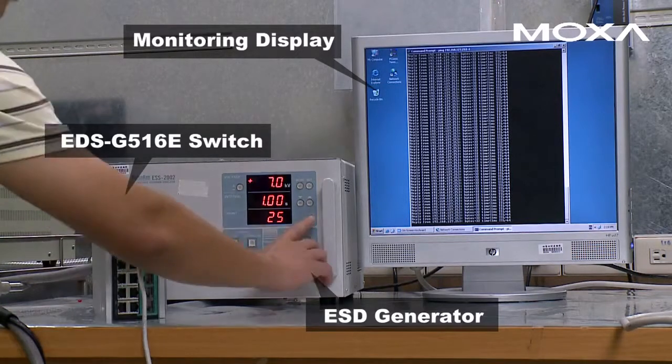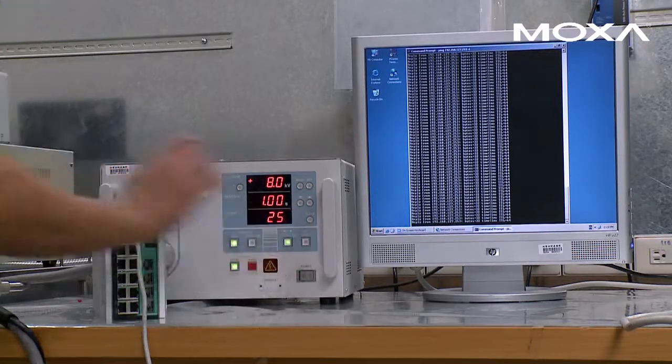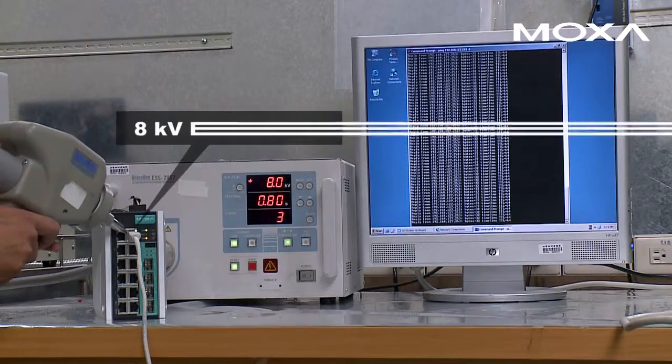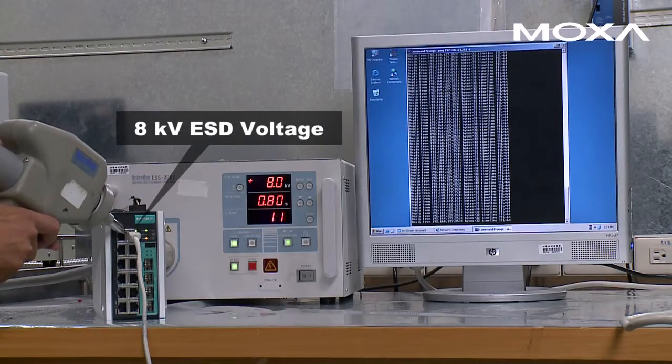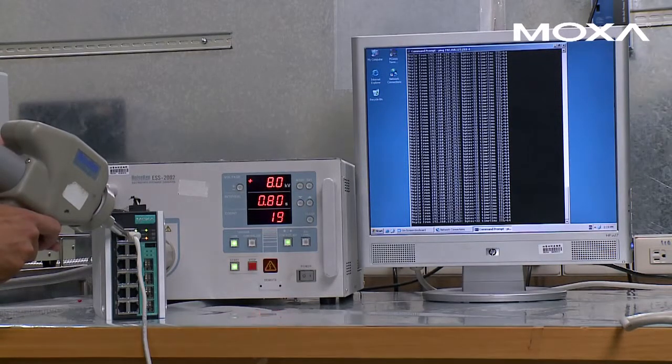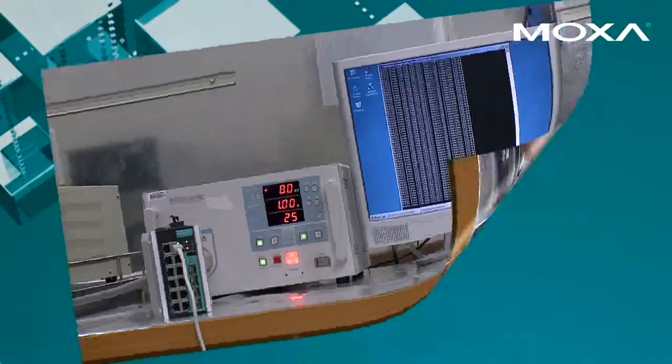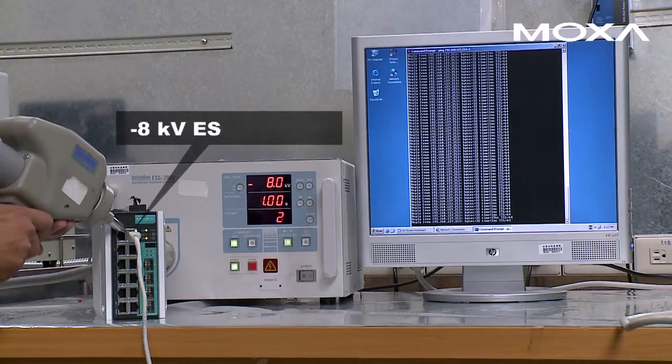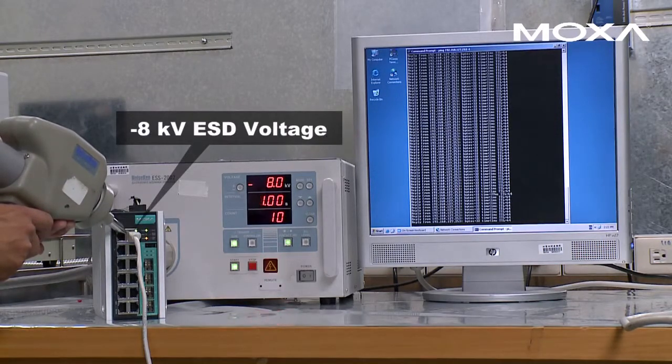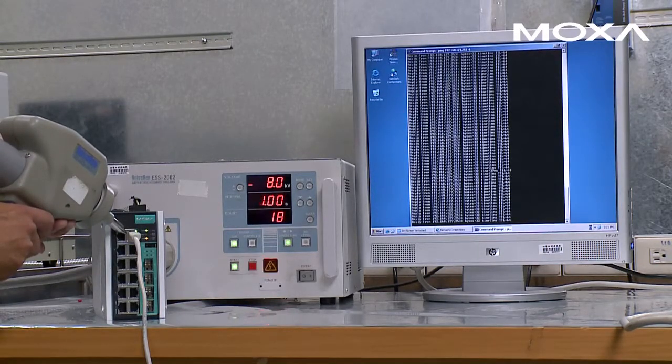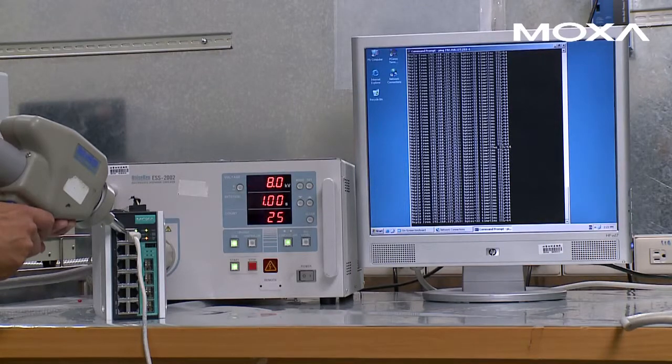Electrostatic discharge is the sudden transfer of static electricity between two objects and can cause equipment failure and network disruption. For this ESD test, we applied a total of 50 positive and negative 8 kilovolt contact discharges to the switch. With level 4 ESD protection, the switch was unaffected by the repetitive contact discharges.